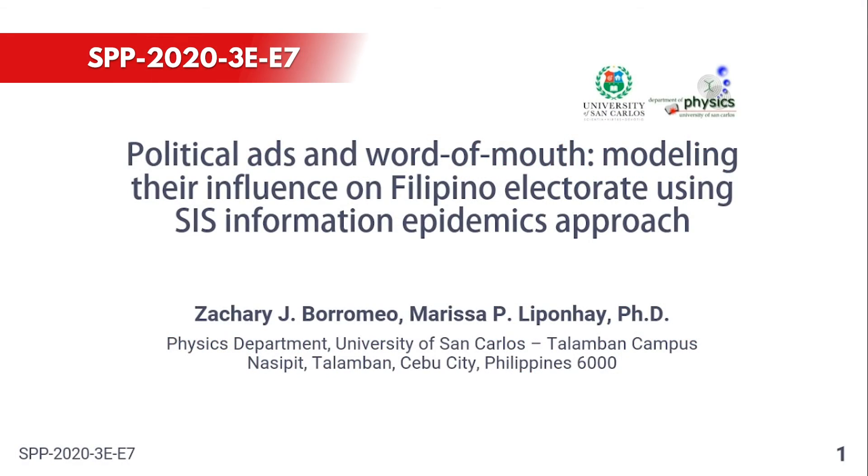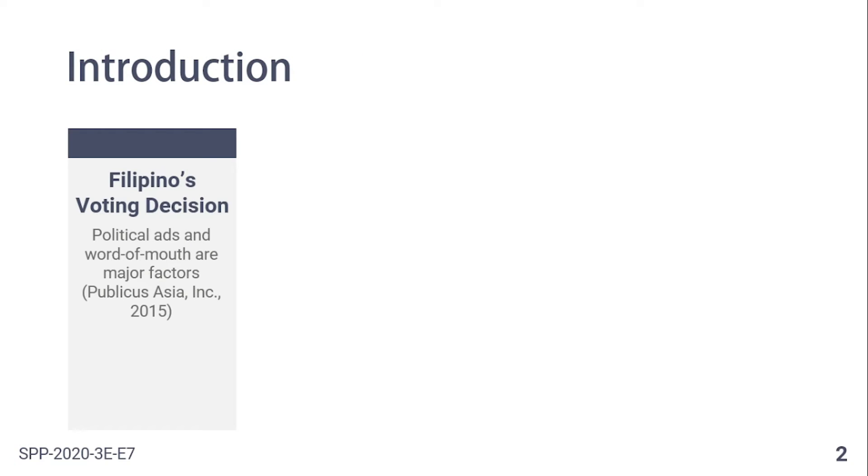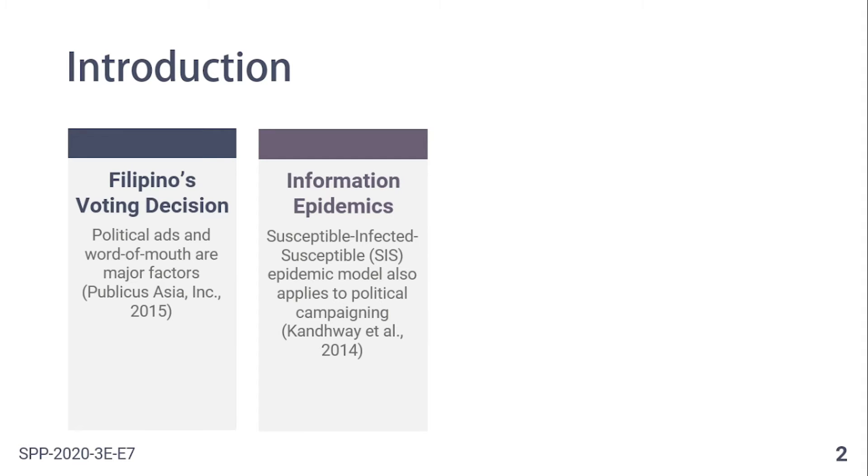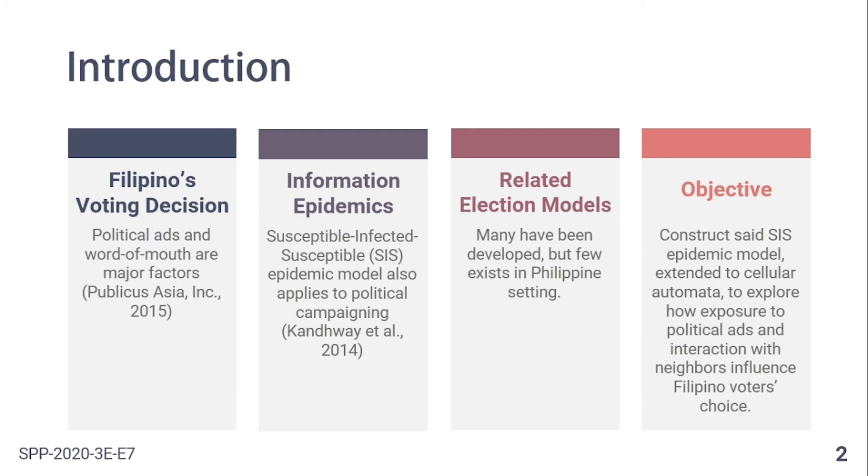I'm Zachary Borromeo, and my paper is entitled Political Ads and Word of Mouth Modeling the Influence of Filipino Electorate Using SIS Information Epidemic's Approach. Political ads and word of mouth are two major factors that shape a Filipino voter's choice. Aside from the spread of common flu, the SIS epidemic model can also be used to describe the spread of information about the candidate in a physical social network. Many election models have been developed, but few exist in Philippine settings. Thus, our aim is to construct said SIS epidemic model extended to cellular automata to explore how exposure to political ads and interaction with neighbors influence Filipino voter's choice.